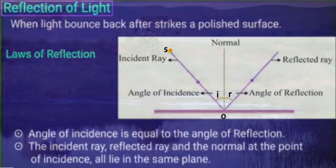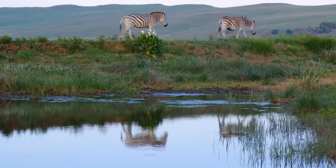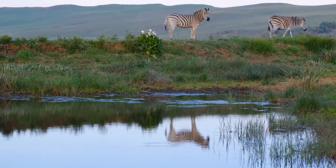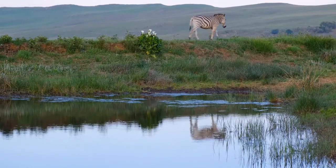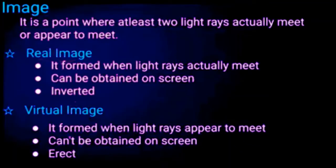The next topic is how images are formed after reflection and refraction. Formation of an image is basically of two types: real image and virtual image. A real image is formed when light rays actually meet. On the other hand, a virtual image is formed when light rays appear to meet but do not meet in reality. A real image can be obtained on a screen but a virtual image cannot. A real image is always inverted, while a virtual image is always erect.